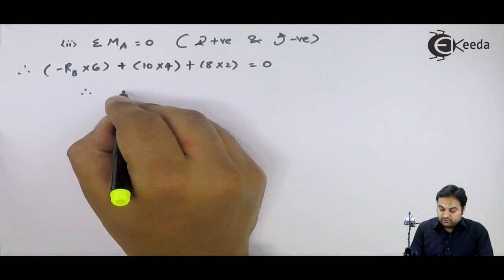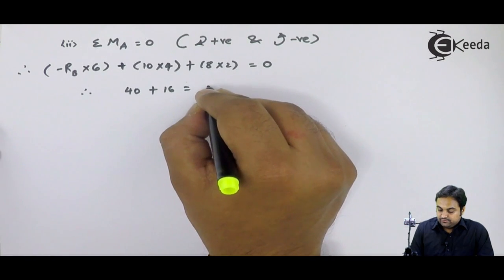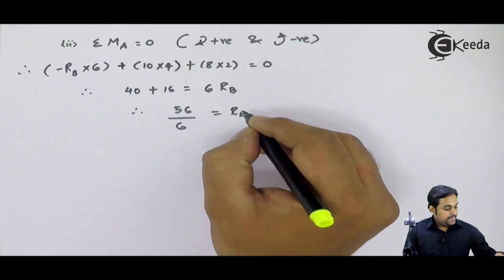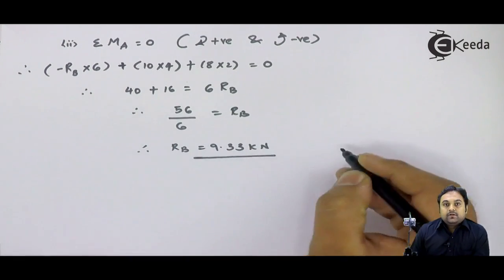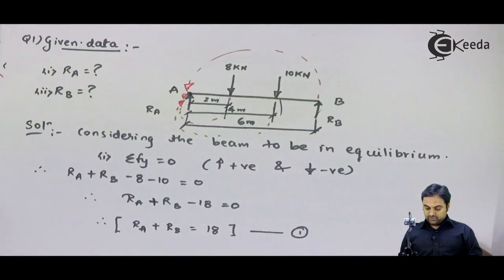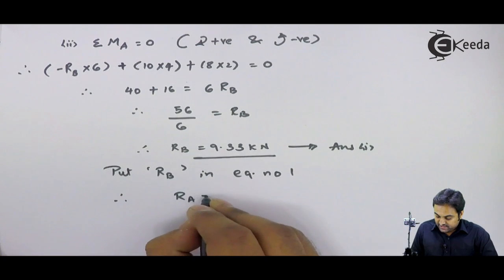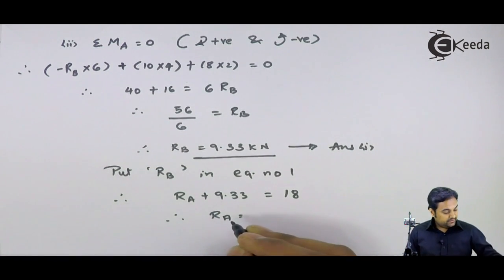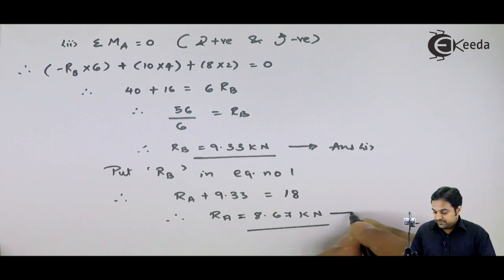This becomes 40 plus 16, and shifting minus RB into 6 to the other side gives 6RB equals 56. Therefore RB equals 56 divided by 6, which gives RB equal to 9.33 kilo Newton. Substituting RB into Equation 1: RA plus 9.33 equals 18, so RA comes out to be 8.67 kilo Newton.